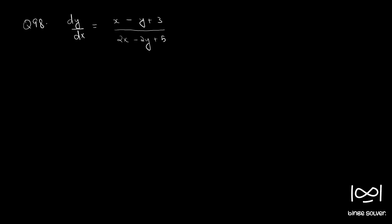Question number 98. dy by dx is equal to x minus y plus 3 by 2x minus 2y plus 5.